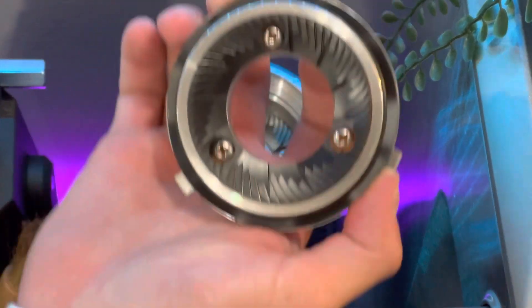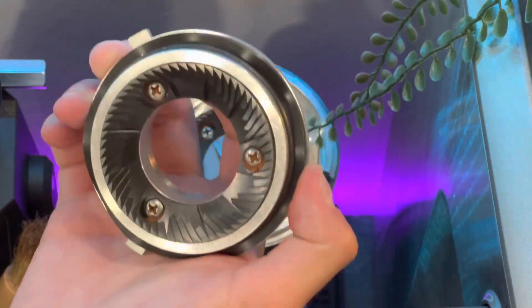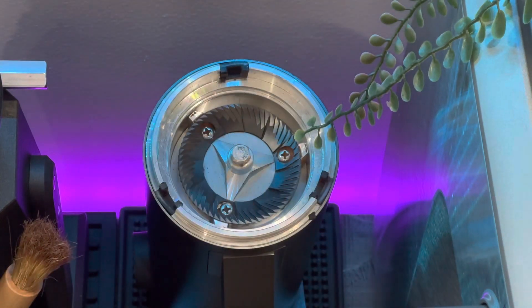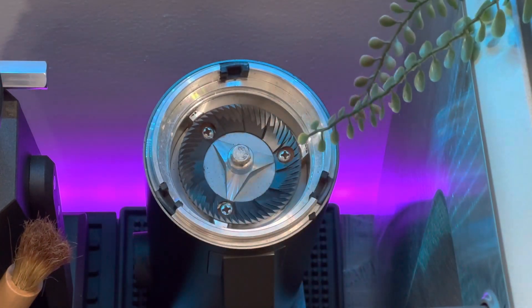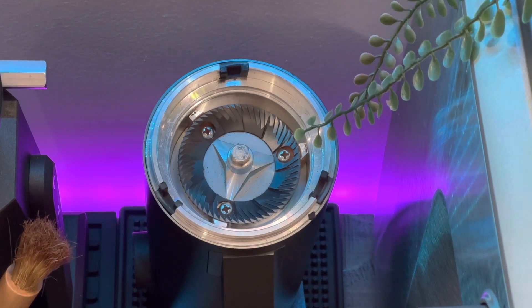But here is the top part of your burr, the DLC burr, which is diamond-like coating. And then here you have the rest of your bottom burr. So this is how you take it apart.